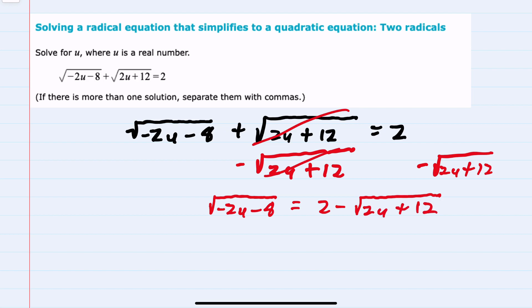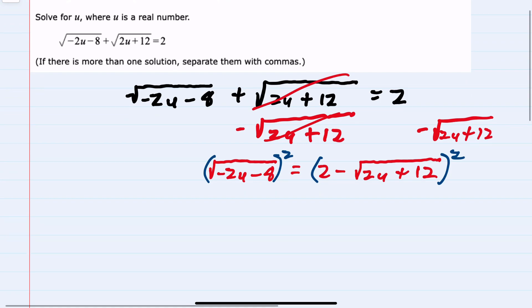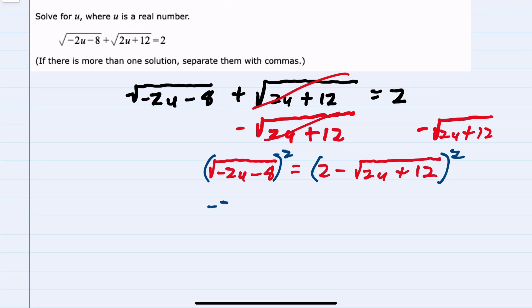From here we can start to remove these radicals by squaring both sides. On the left hand side we now have just what's under the radical, so we've canceled the radical with the square. On the right hand side we have (2 - √(2u+12)) times (2 - √(2u+12)).